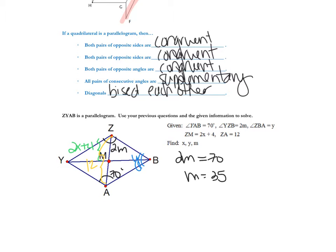From there, I want to find Y. To find Y, remember that consecutive angles are supplementary. So this angle and this angle add up to 180. So 180 minus 70 gives me 110 degrees for Y.